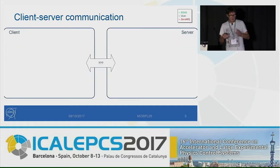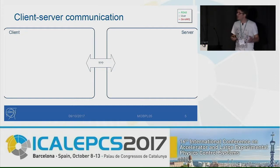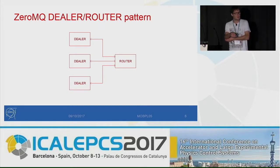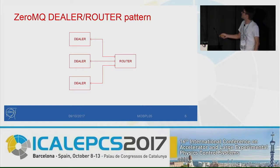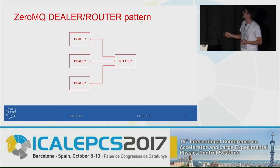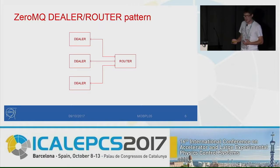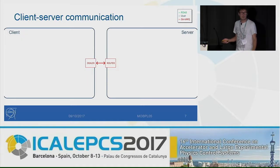Let's dig a bit more into how we integrated 0MQ into our solution. We have the client and the server, and we want to enable network communication between the two. The first pattern we use from 0MQ is called dealer-router. On the clients, we can create one dealer per client — dealer basically gives you bidirectional asynchronous communication. On the server, we put a router, which you can connect to many dealers, and it can access a specific dealer using an identifier. This pattern is very convenient when you want to connect one server to many clients, which is why we use dealer-router.